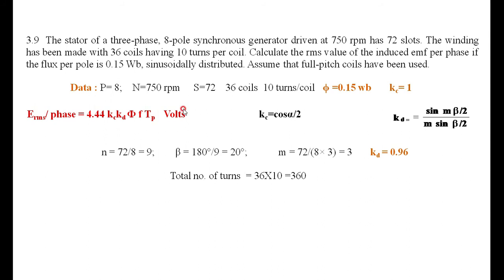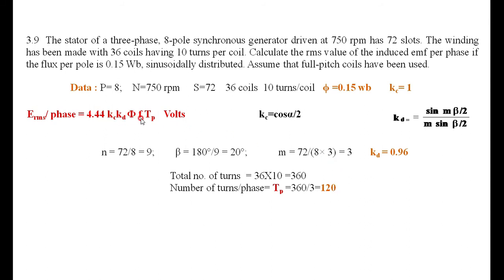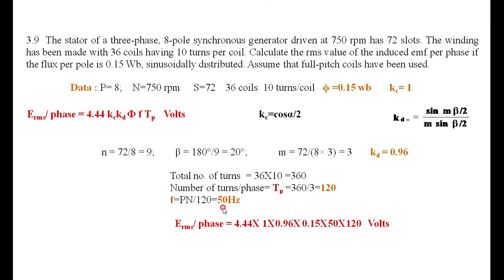To find turns per phase: there are 36 coils with 10 turns each, giving 360 total turns. Turns per phase Tp = 360/3 = 120. Frequency f = PN/120 = 8×750/120 = 50 Hz. Substituting all values — Kc=1, Kd=0.96, phi=0.1, f=50, Tp=120 — into the equation gives the generated voltage per phase equal to 3836 volts.